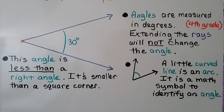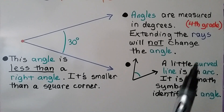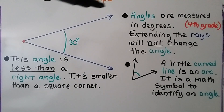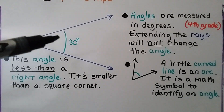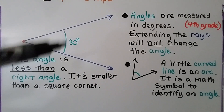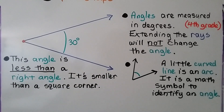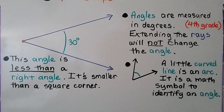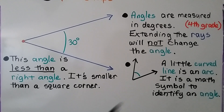Angles are measured in degrees, and you'll learn about that in fourth grade. Extending the rays — making them longer — will not change the angle. The angle will stay the same measure no matter how long the rays are. This angle is less than a right angle; it's smaller than a square corner. The little curved line is called an arc, and it's a math symbol to identify an angle.